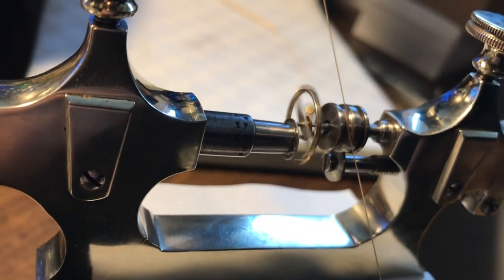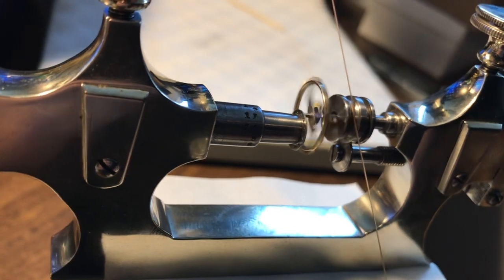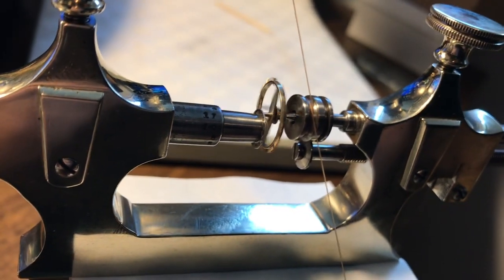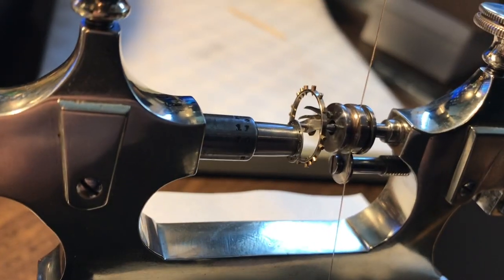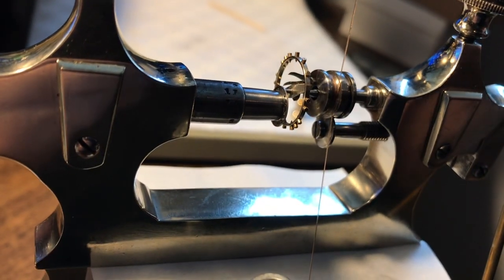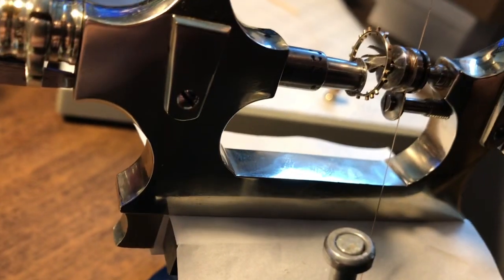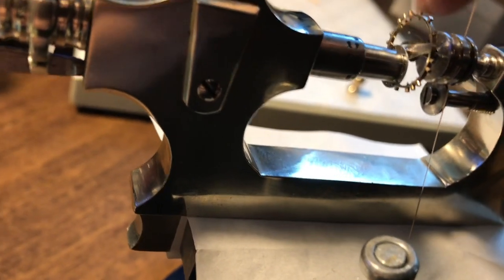When you twist like this the balance staff and the pivot stick out the other end. I chose a 0.12 end on this cap here so that I would be able to shave a little bit off.